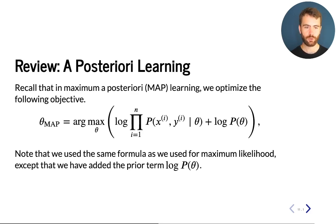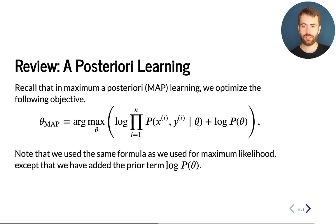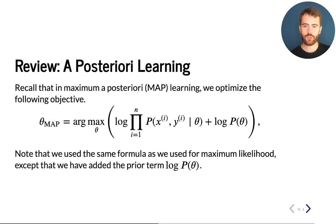In maximum a posteriori learning, we are maximizing the joint distribution as our objective. But instead of looking at the full distribution of theta given the data, we're only trying to find the most likely value of theta under the joint model, rather than looking at the full distribution. I'm going to focus on the MAP approach and show how we can derive some of the algorithms we have seen earlier in this course as a special case of MAP learning.